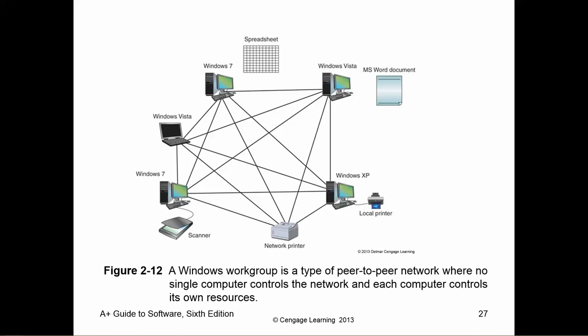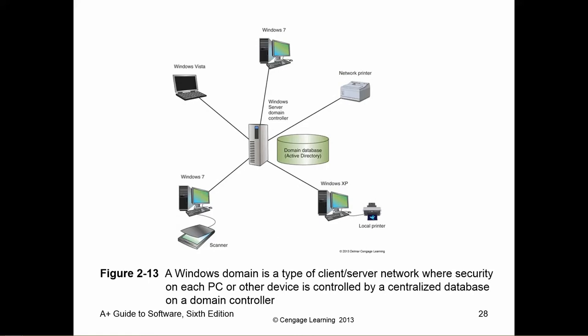In a work group, everyone shares everything with everyone, but user accounts are individual on each computer. In a domain, everything is centrally connected to that domain controller — user accounts are controlled on the domain controller, so if you update a password on one machine, it's updated everywhere because all passwords are stored on the domain controller.